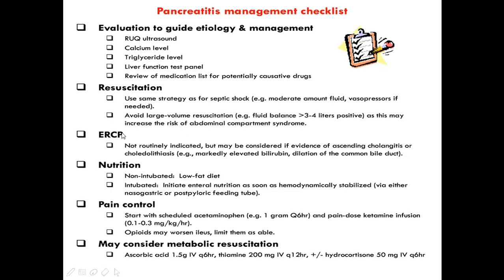ERCP is not routinely indicated but may be considered if there is evidence of ascending cholangitis or markedly elevated bilirubin with dilatation of the common bile duct. Regarding nutrition: in a non-intubated patient, use a low-fat diet; in an intubated patient, initiate enteral nutrition as soon as hemodynamically stable via nasogastric or post-pyloric feeding tube. For pain control, use acetaminophen or ketamine infusion; opiates are better avoided as they may worsen ileus. Consider metabolic resuscitation with ascorbic acid, thiamine, and hydrocortisone if indicated.